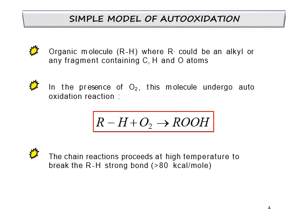Examples of auto-oxidation: it could happen to any organic molecule whereby the compound has an acyl fragment which consists of carbon, hydrogen, or oxygen atoms. This organic molecule, with the presence of oxygen, will undergo the oxidation reaction. For strong bonds of alkanes, it requires higher temperature in order to break the R–H bond.